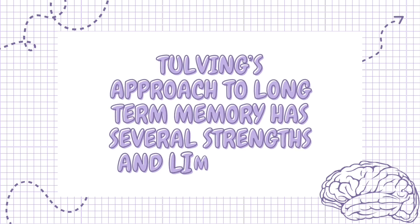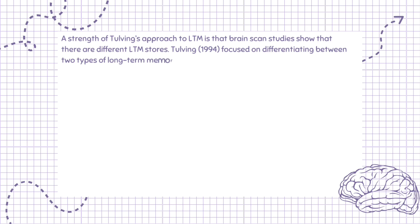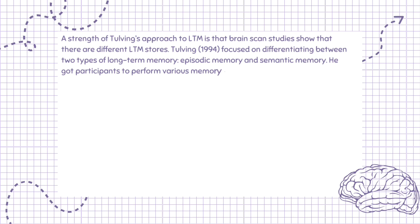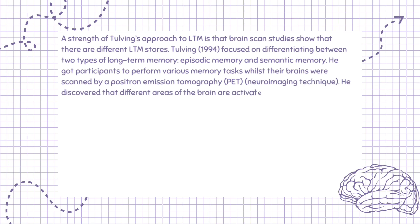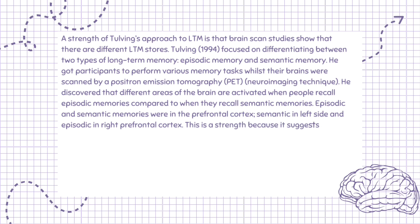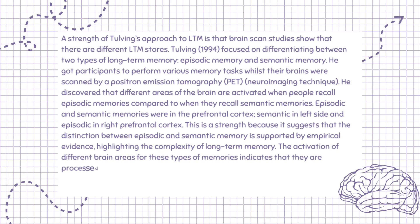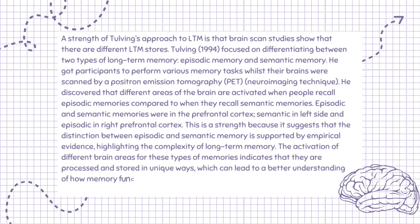A strength of Tulving's approach to LTM is that brain scan studies show that there are different LTM stores. Tulving, 1994, focused on differentiating between episodic and semantic memory. He got participants to perform various memory tasks whilst their brains were scanned using a positron emission tomography (PET) neuroimaging technique. He discovered that different areas of the brain are activated when people recall episodic memories compared to semantic memories — episodic in the right prefrontal cortex and semantic in the left. This is a strength because it suggests that the distinction between episodic and semantic memory is supported by empirical evidence, highlighting the complexity of long-term memory and the potential for targeted interventions in cases of memory impairment.